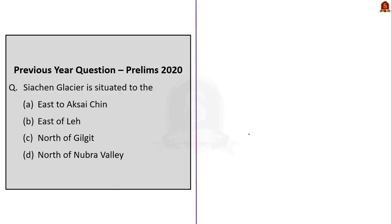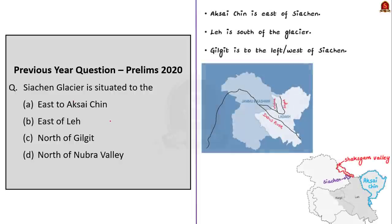Now, keeping this information in mind, let us look at the question options. Option A: Siachen Glacier is situated to the east of Aksai Chin. As you can see in the maps, Aksai Chin is east of Siachen, not the other way around, so this is incorrect. Option B: east of Leh. Leh is south of the glacier, so this option should have been north of Leh — also incorrect.